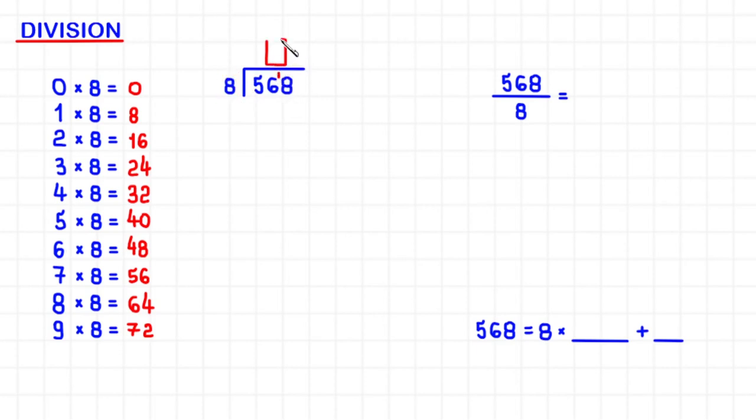What number from 0 to 9 do I multiply by 8 to get almost 56 or 56, but not more than 8? By looking at the multiplication table, I see that 7 times 8 equals 56, so the number we were looking for is 7.